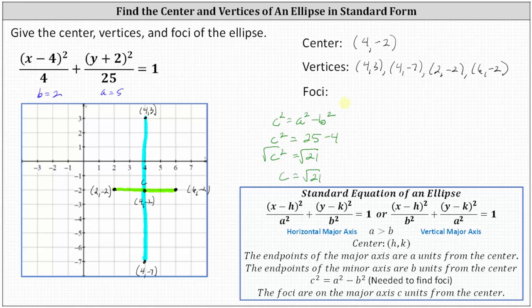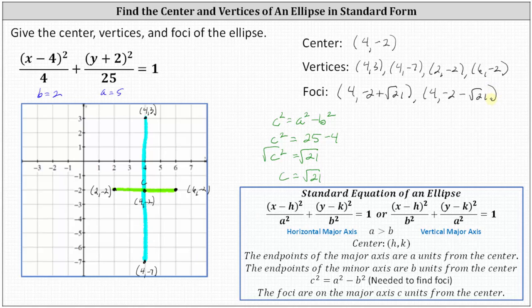Let's find the exact coordinates first, and then we'll get decimal approximations to plot them on the coordinate plane. One focus will be (4, -2 + √21) and the other focus will be (4, -2 - √21). We're adding and subtracting √21 to the y-coordinate of the center because the foci are on the vertical major axis.